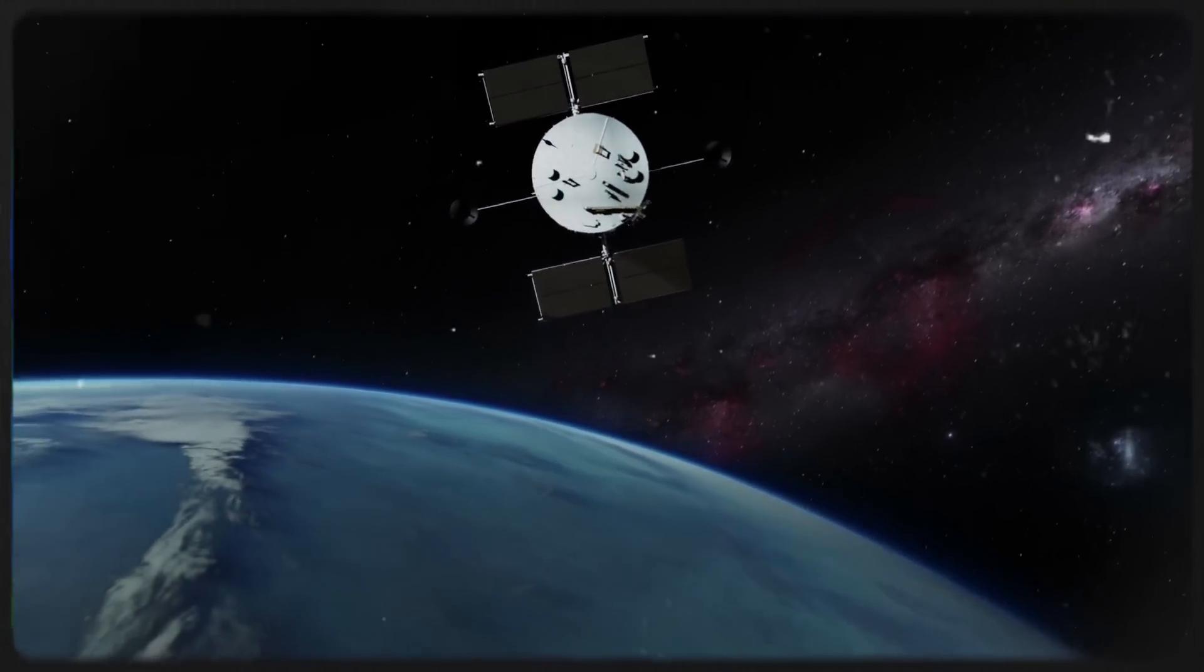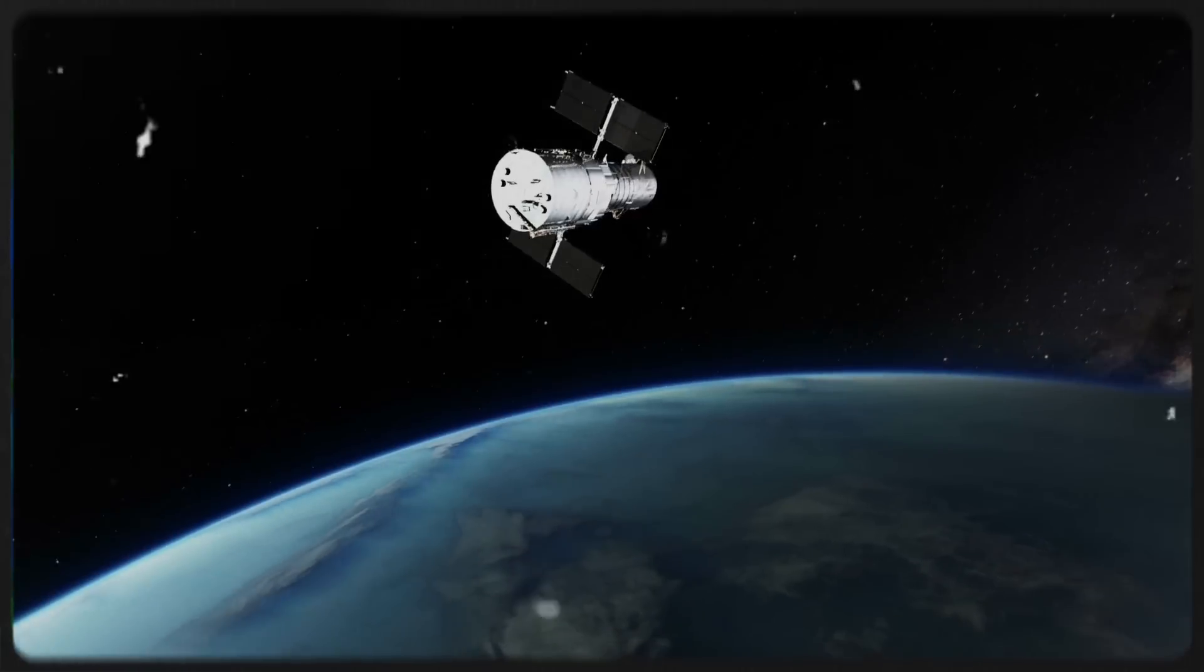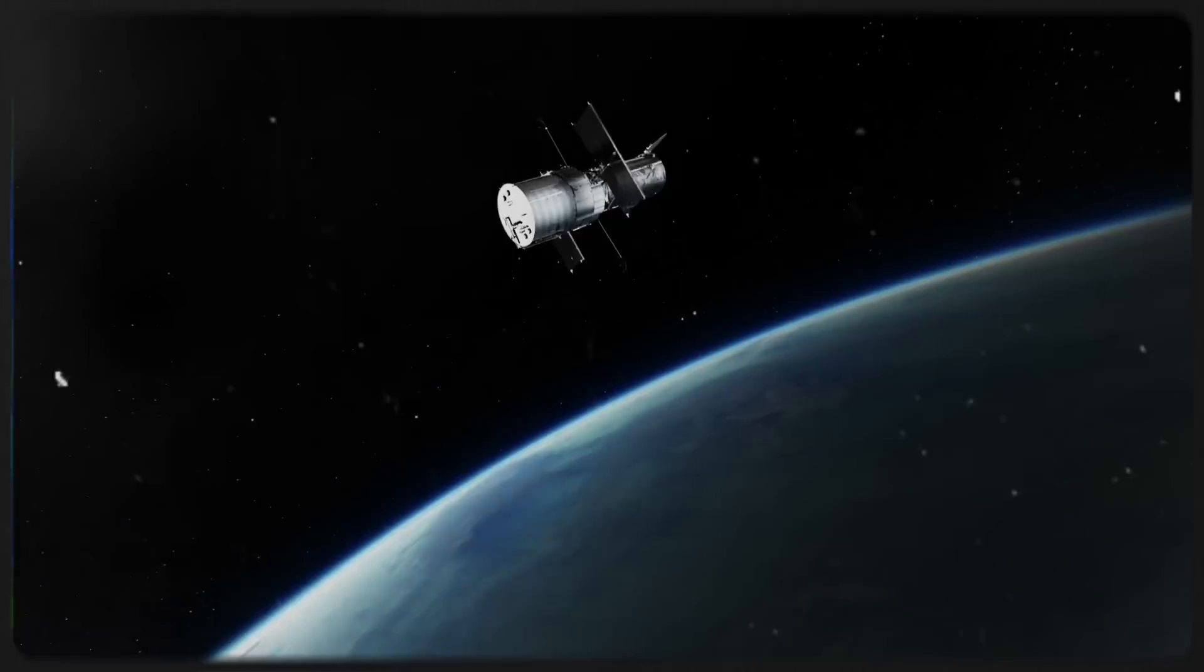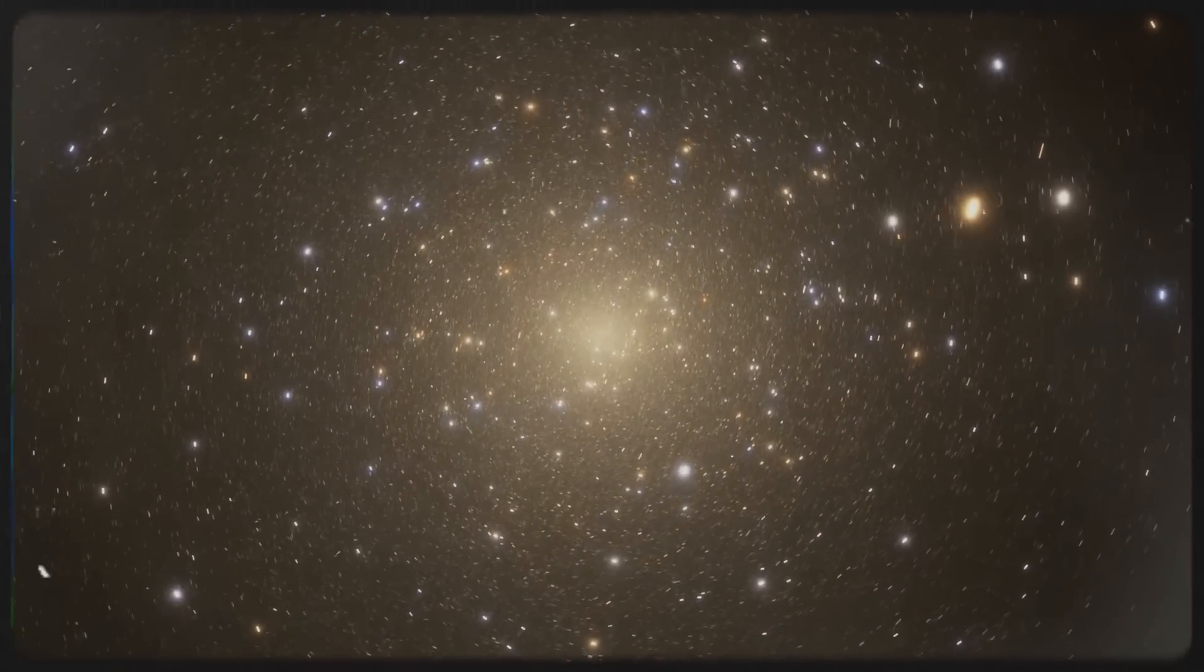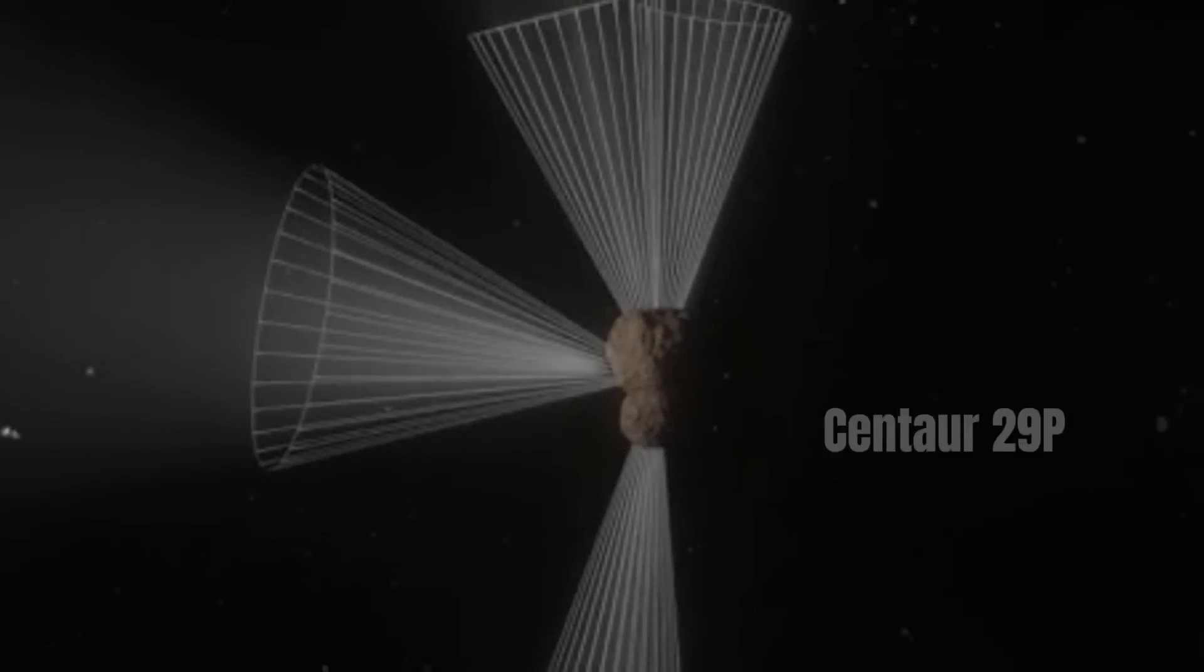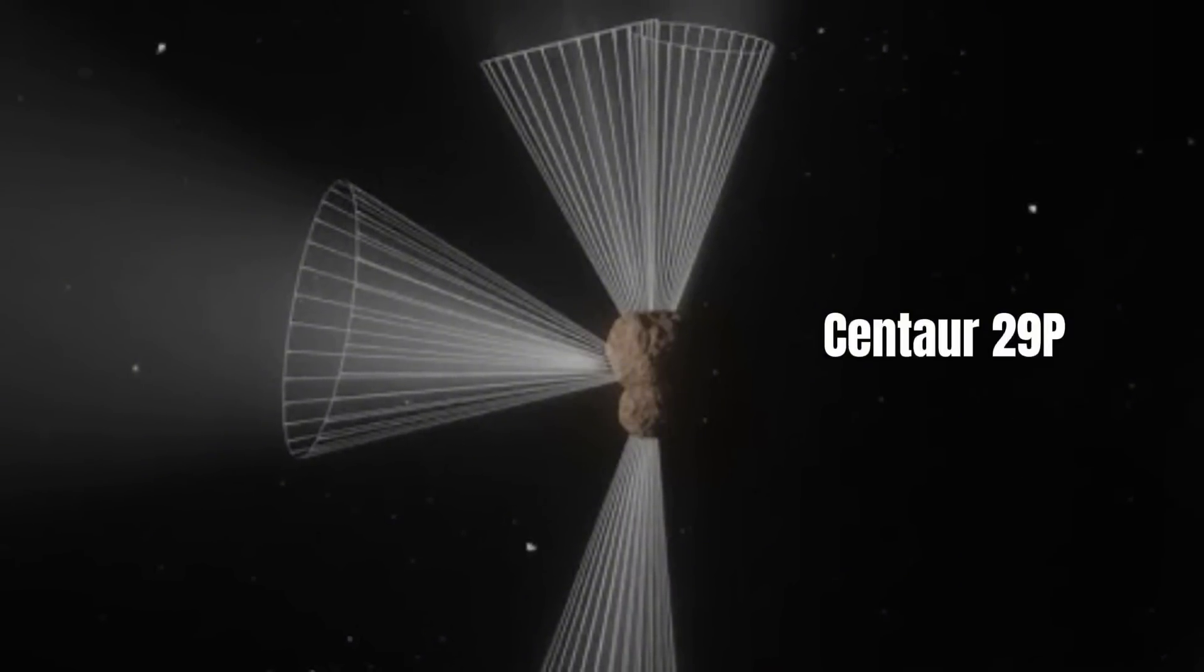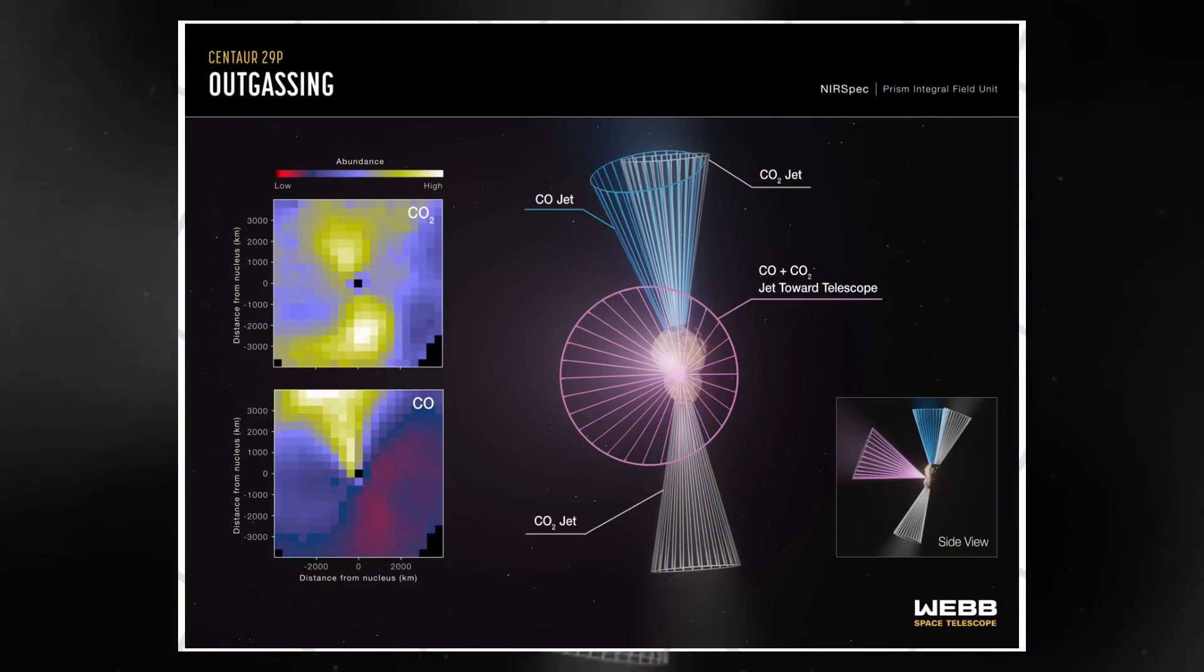Meanwhile, a stunning new image was created using data from both Webb and Hubble, capturing two spiral galaxies engaged in a mesmerizing cosmic dance. The image highlights regions rich in star-forming gas and dust. Another intriguing observation comes from Centaur 29P, a celestial object orbiting between Jupiter and Neptune. The telescope caught at releasing jets of carbon dioxide and carbon monoxide, akin to an asteroid venting cosmic gas clouds.